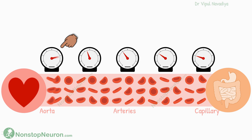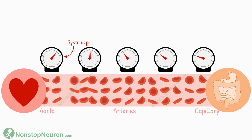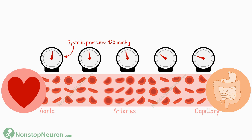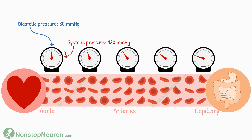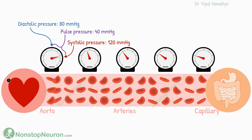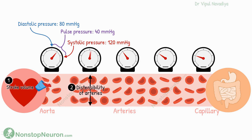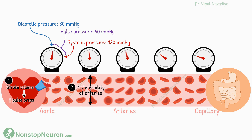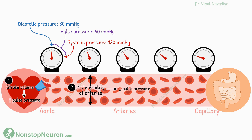As the wave travels, it causes fluctuation in blood pressure. The upper pressure during this is called systolic pressure — at the aorta, it's about 120 mmHg. The lower pressure is the diastolic pressure, about 80 mmHg. And the difference between the two is pulse pressure; as you can calculate, it's 40 mmHg. This pulse pressure depends on two factors: stroke volume and distensibility of the arteries. More stroke volume means more blood is pushed into the arteries with each heartbeat, which increases the pulse pressure. And if the vessel is more distensible, it dampens the pressure by getting distended more — so the more the distensibility, the less the pulse pressure.